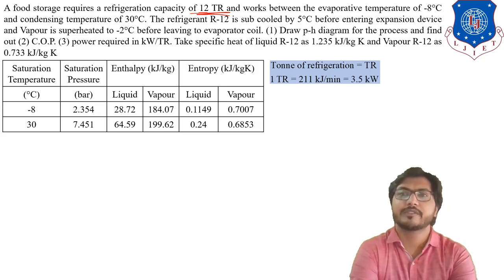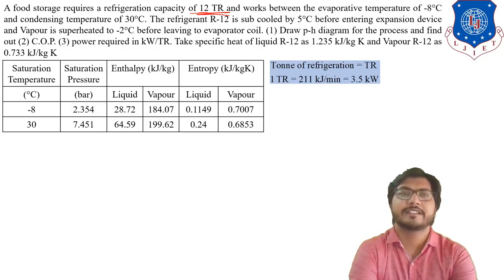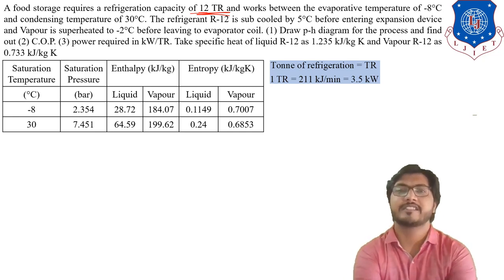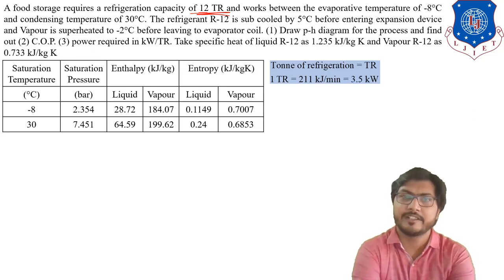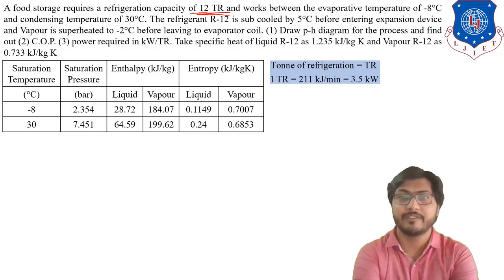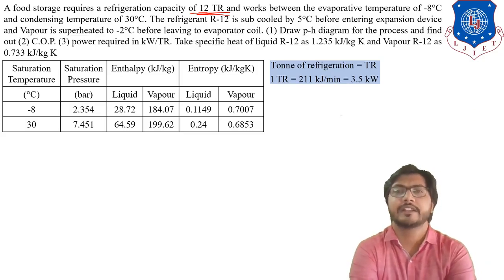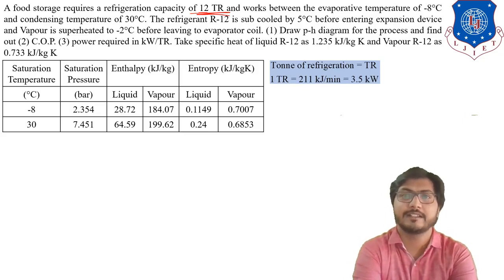We need to first draw a P-H diagram for the process and find out the COP of the plant and power required in kW per ton. The specific heat of liquid refrigerant is given as 1.235 kJ/kg·K and for vapor it is 0.733 kJ/kg·K. Remember: when the refrigerant is in vapor phase, use Cp = 0.733, and when in liquid phase, use Cp = 1.235 kJ/kg·K. This data is very important.